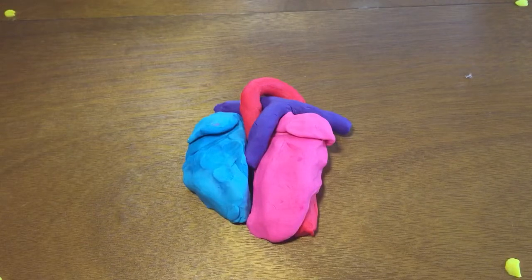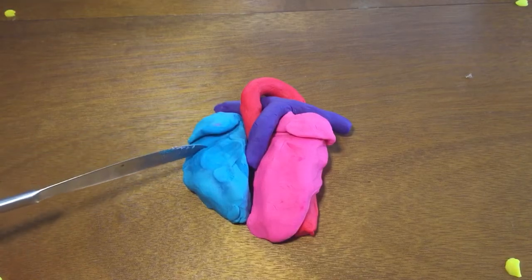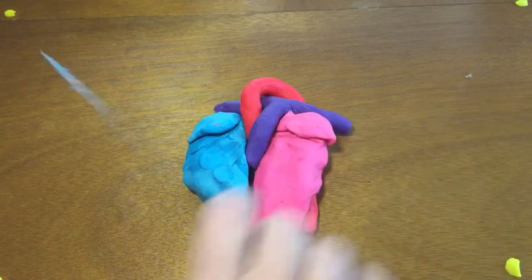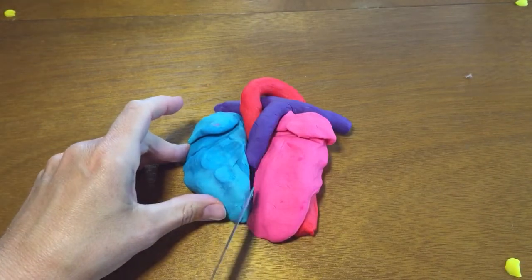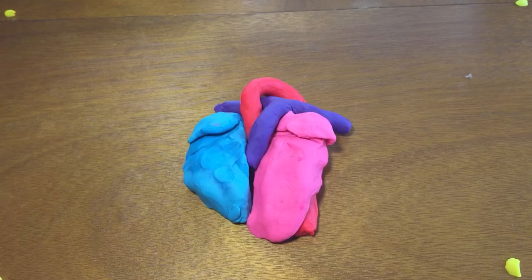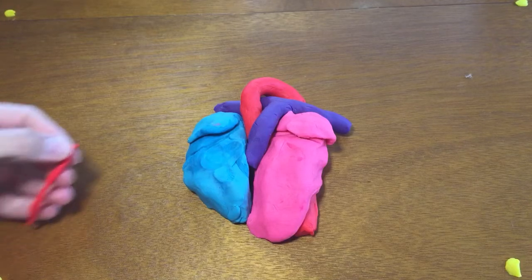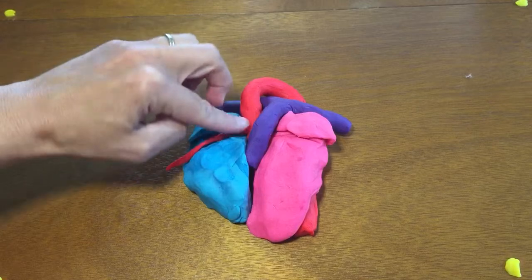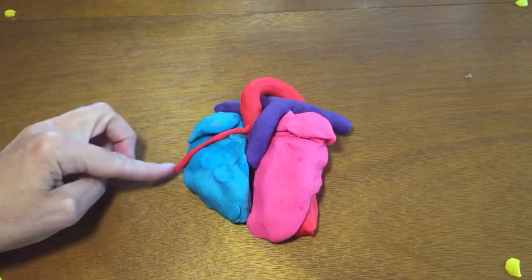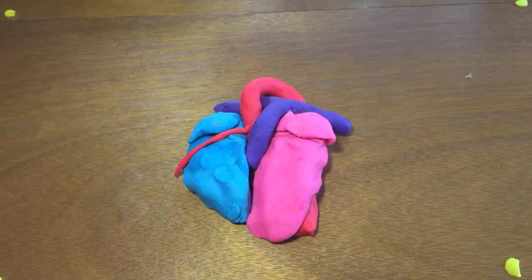In between the atria and the ventricles, you have the coronary sulcus. A sulcus is a groove. We have one on each side, coronary sulcus. We also have an interventricular sulcus between the two ventricles. So the coronary sulcus is important because that's where we're going to find the right coronary artery. The right coronary artery branches off of the aorta and travels through the coronary sulcus between the right atrium and the right ventricle. So there's our right coronary artery.